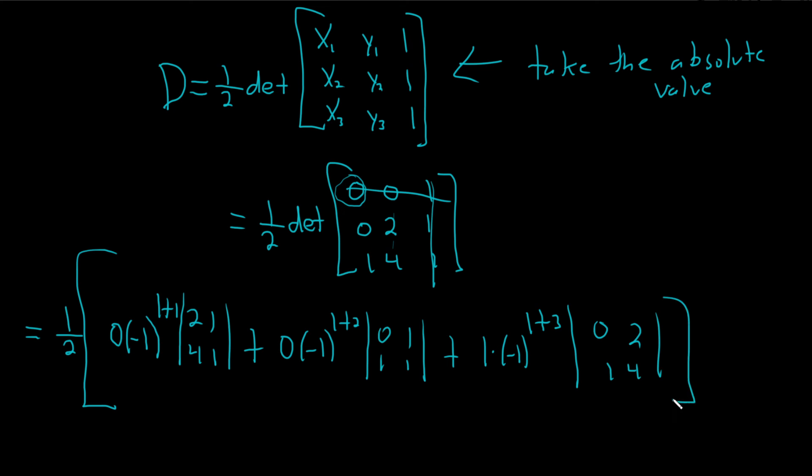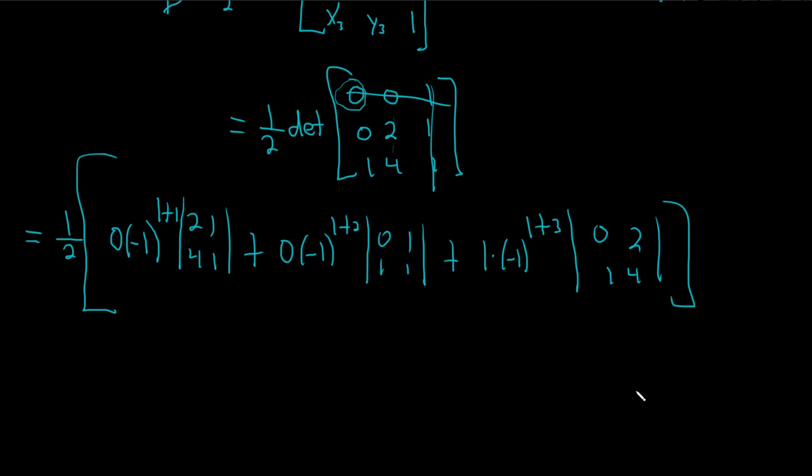All right, beautiful stuff, so this is going to be equal to 1 half, bracket, all of these things go away, so 0 plus 0, this will be 1 because it's an even number, right, negative 1 to an even power is 1 times, and this will be 0 times 4 minus 2 times 1.